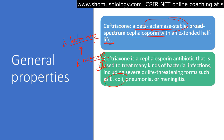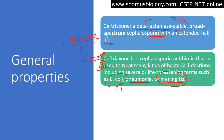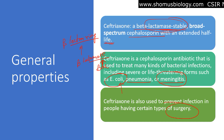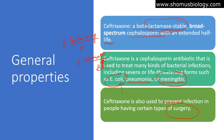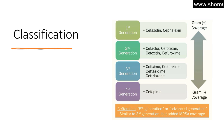Ceftriaxone is a cephalosporin used to treat different kinds of infections including life-threatening forms of E. coli infection, pneumonia, and meningitis. It is also used to prevent infections in people having certain types of surgery — such as post-surgery nosocomial infections acquired from hospital environments where there are open wounds.